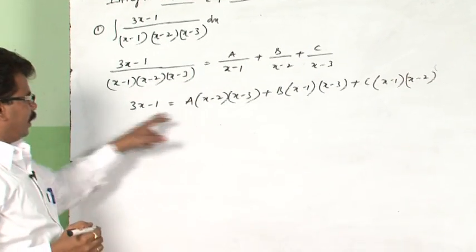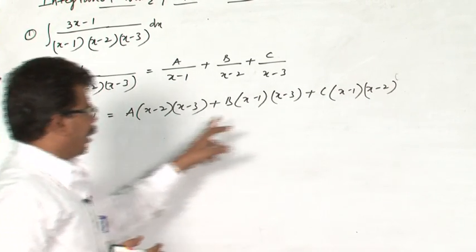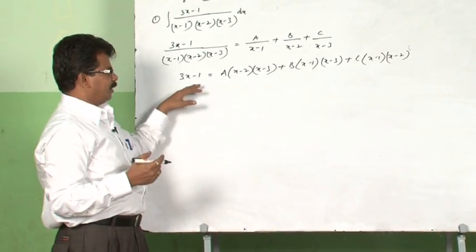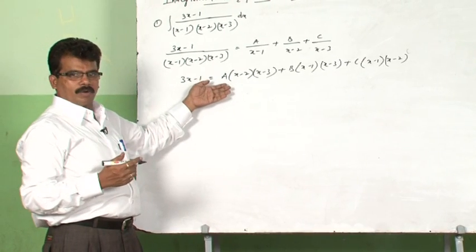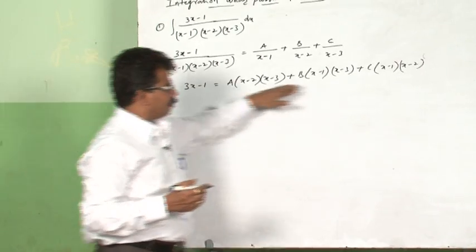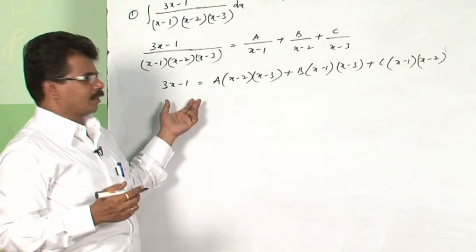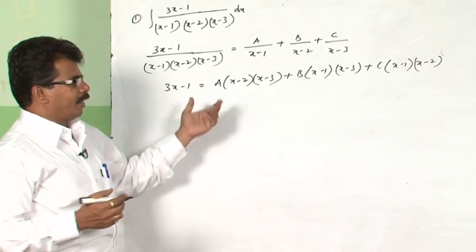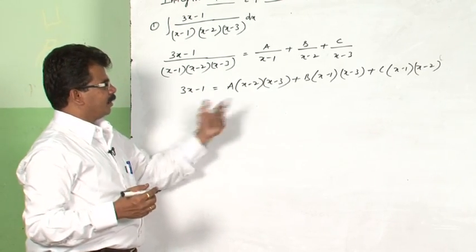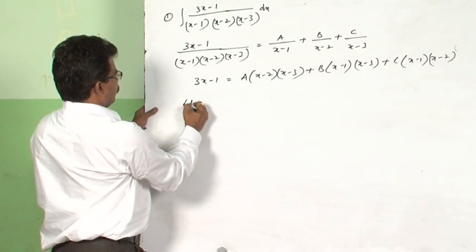Write: 3x − 1 = A(x − 2)(x − 3) + B(x − 1)(x − 3) + C(x − 1)(x − 2). The denominators on both sides cancel, leaving this equation. We apply the elimination method: if we want A, we eliminate the B and C terms by letting x = 1.